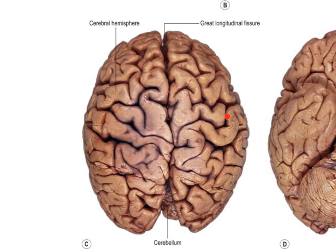Here is the central sulcus once more. I can tell it's the central sulcus because it runs continuously from the midline all the way down to the temporal lobe uninterrupted. This is our pre-central gyrus, and here's our post-central gyrus as well. We can see a little bit of the cerebellum visible just between the two occipital lobes, and of course the frontal lobes and the parietal lobes. So that's our superior view of the brain.